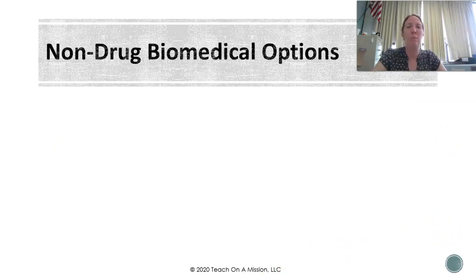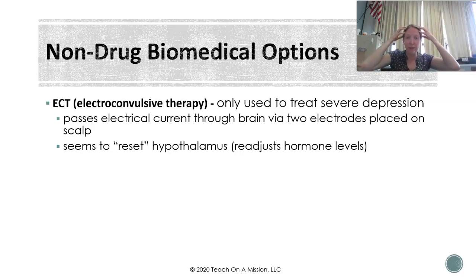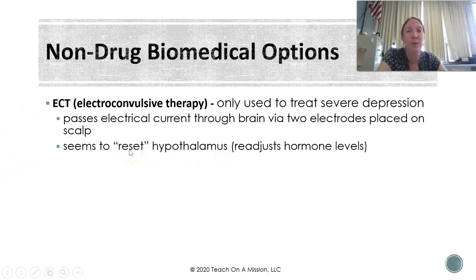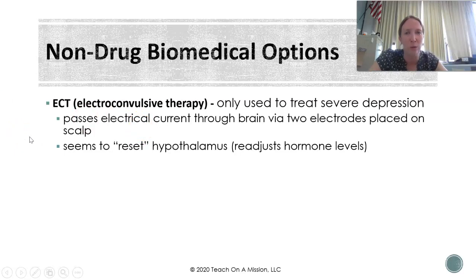Last but not least are two non-drug biomedical options — things that medical doctors can do to alter your brain without medication. The first is ECT, electroconvulsive therapy, used only to treat severe depression. It sounds harsh, but electrodes are placed on the scalp and an electrical current is passed through the brain. What it seems to do quite successfully is reset the hypothalamus, which influences what hormones are released and when, getting it back into gear. It's seen as fairly successful for severe depression, but also as a last-ditch effort because it's still not a good thing for your brain — a last resort if you've tried all other options and the depression is so severe it's making your life miserable.